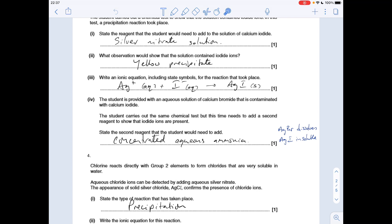I suppose the tricky bit of this question: the student's provided with aqueous solution of calcium bromide contaminated with calcium iodide. Student carries out the same chemical test but this time needs to add a second reagent to show that iodide ions are present. The reagent they should add is concentrated aqueous ammonia, and that's because the silver bromide dissolves in concentrated aqueous ammonia but the silver iodide is insoluble in it. If you add dilute aqueous ammonia, neither of them would dissolve so you wouldn't be any further forward.